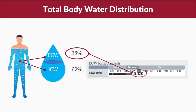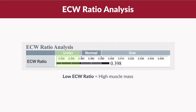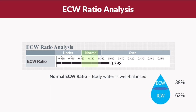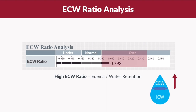When we convert the ECW percentage into a ratio, we will see a value of 0.38 in the result sheet. A low ECW ratio below 0.36 indicates high muscle mass, which is due to the increase in intracellular water stored in the muscles. A normal ECW ratio between 0.36 to 0.39 indicates that the body water is well balanced, and a high ECW ratio above 0.39 indicates edema or excess water retention in the body.